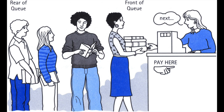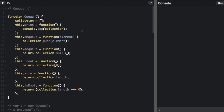An example in real life is when you are waiting in line to buy something at a store. The first person to get in the line is the first person to get to the cash register. Another example is a print queue — when a lot of people are printing documents at the same printer, the documents are printed in the order they were sent to the print queue.